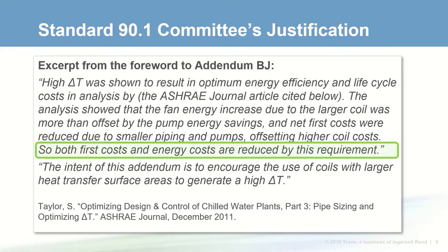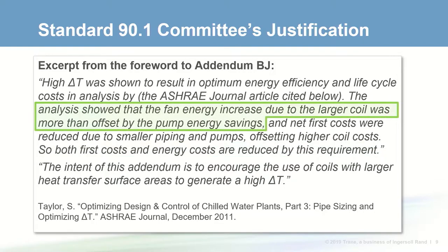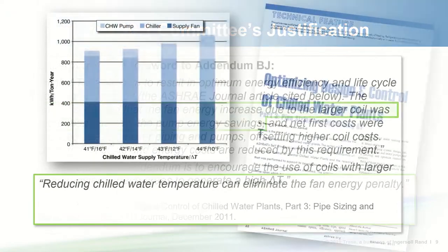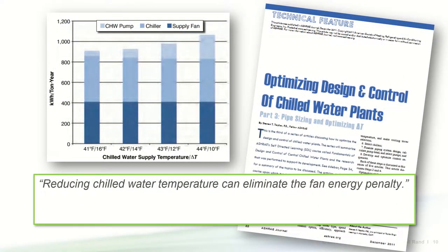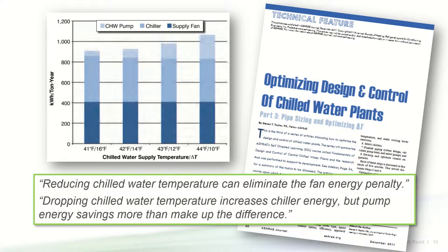The analysis showed that designing a chilled water system for higher delta T reduced first costs due to smaller valves, piping, and pumps, and also reduced energy costs. The results showed that the increase in fan energy due to added coil surface was more than offset by the pump energy savings. The article also showed that using a slightly lower chilled water supply temperature would allow for a coil selection with no impact on supply fan energy — no change in surface area or air pressure drop — and the pump energy savings still outweighed the slightly higher chiller energy.